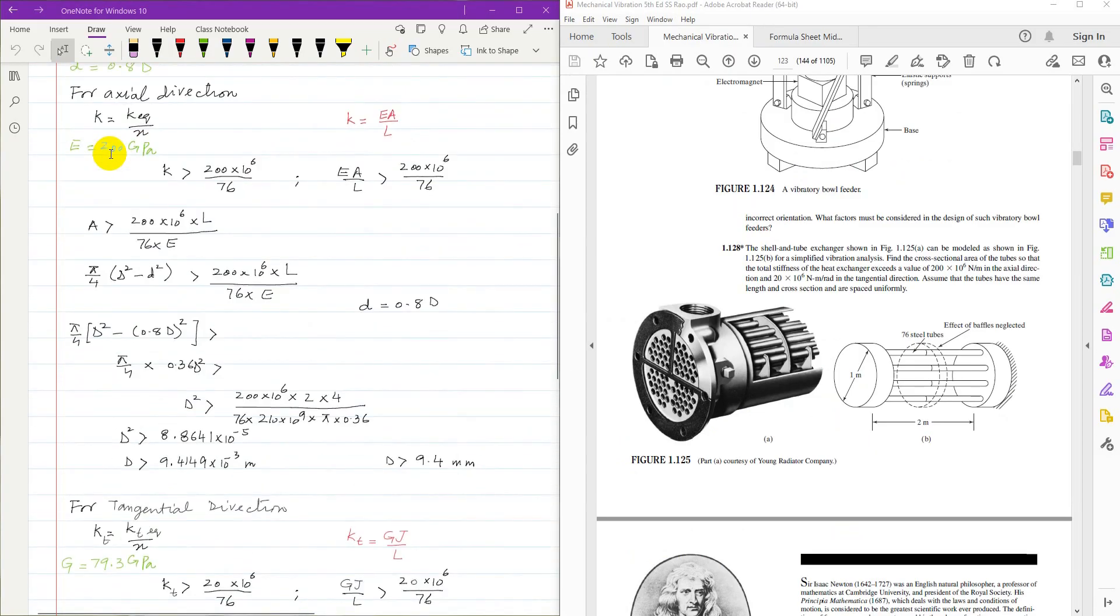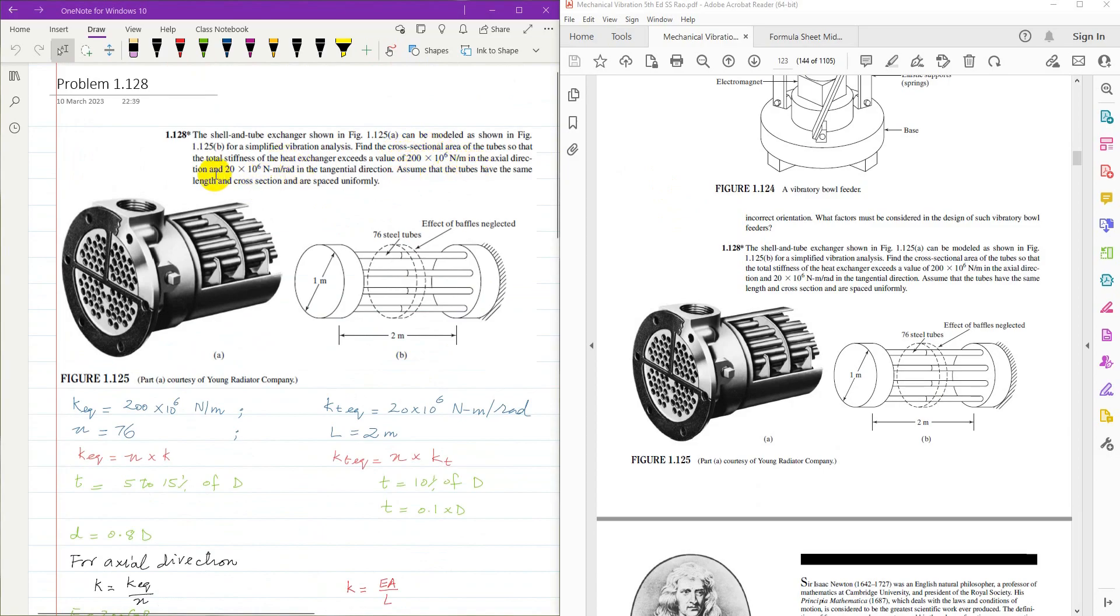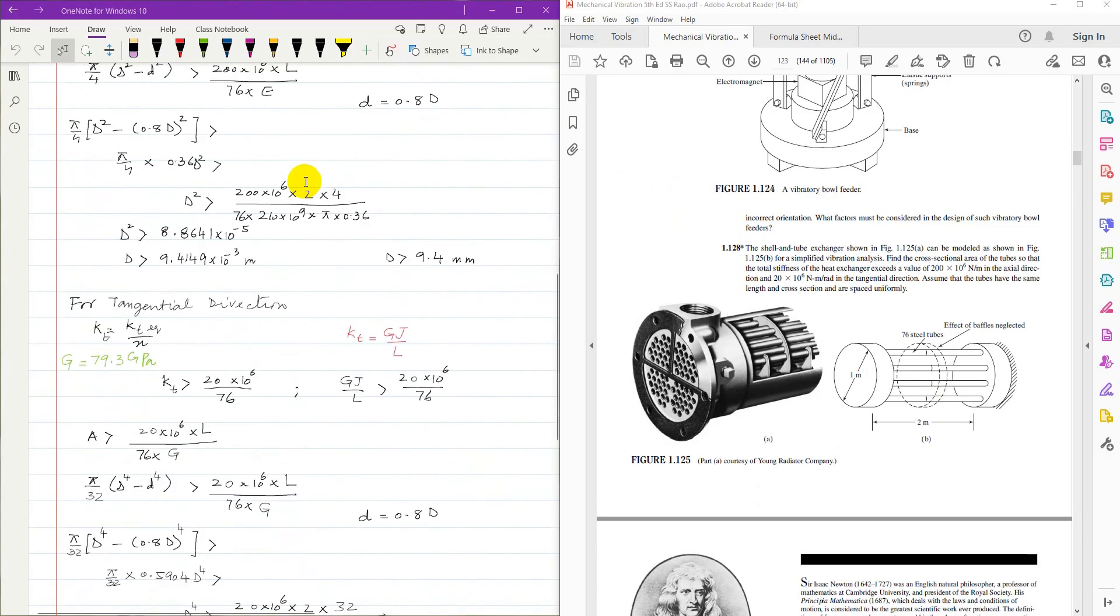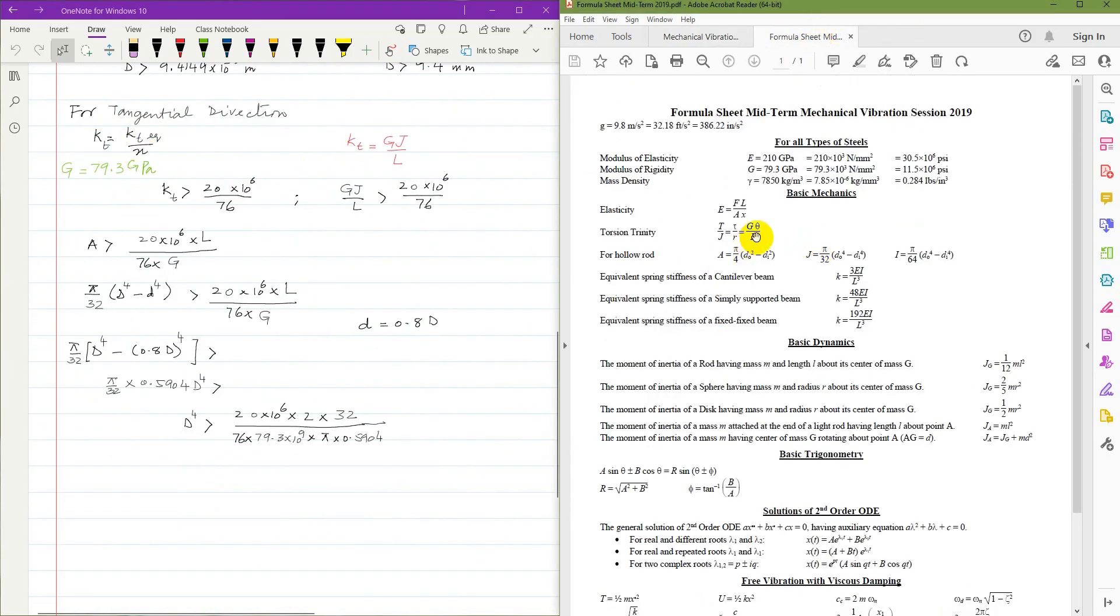Next for tangential direction, kt is equal to kt equivalent over n. In tangential direction, kt is 20 into 10 to the power 6 newton meter per radian. kt is kt equivalent over n. And kt from torsion equation, T over theta is JG over L. Then kt must be greater than 20 into 10 to the power 6 over 76 or JG over L. L is being multiplied with the numerator and G is being divided with the denominator. G in this case for most types of steel is 79.3 gigapascal.